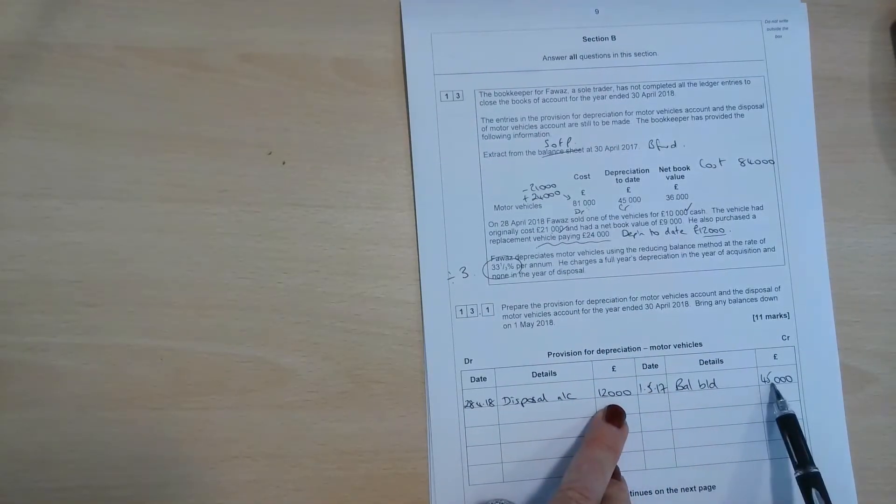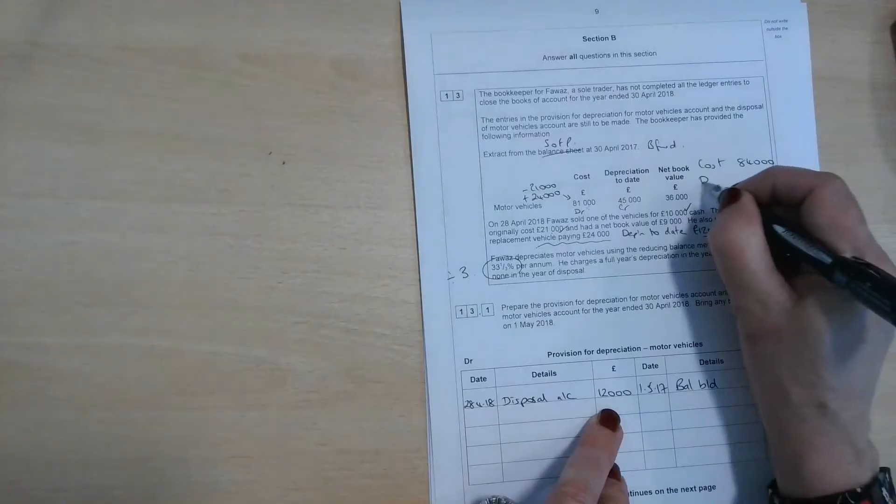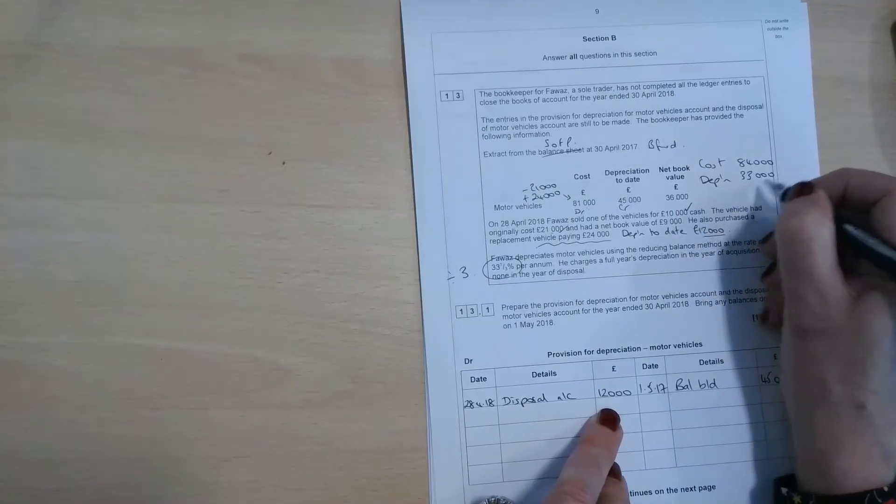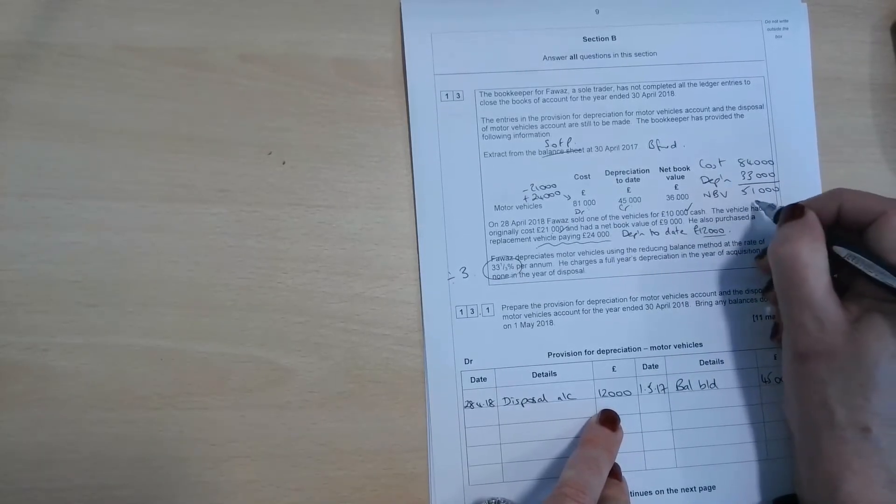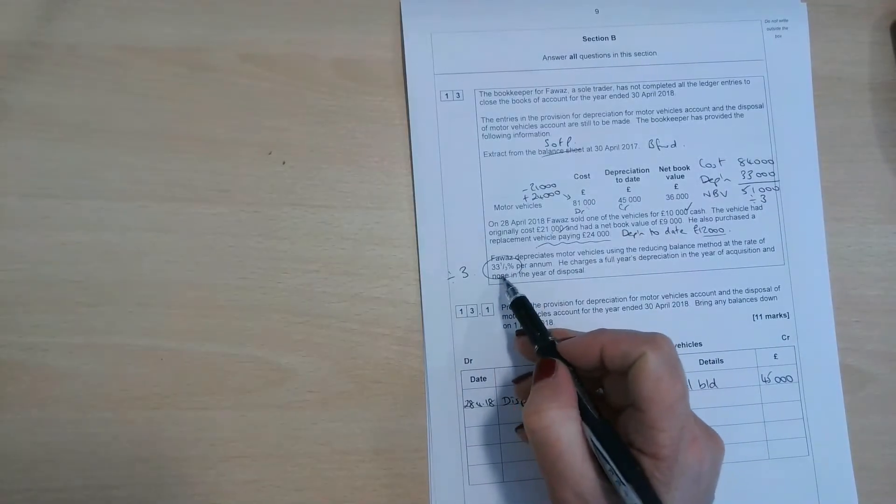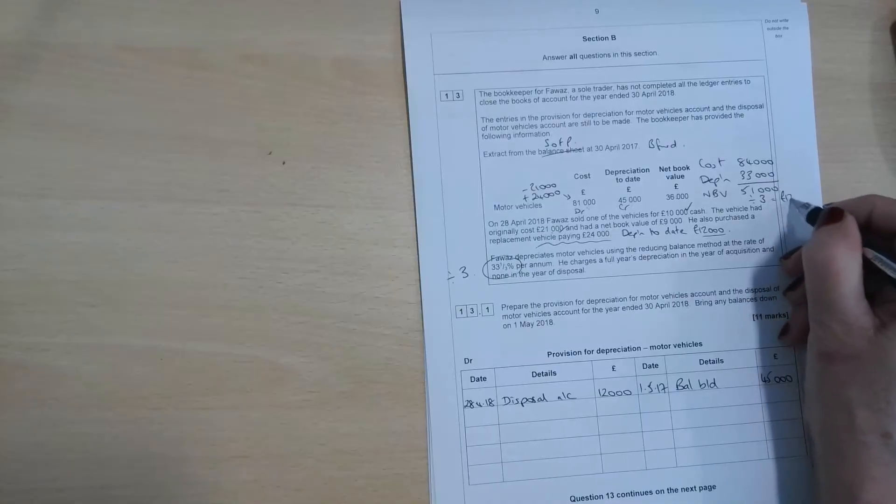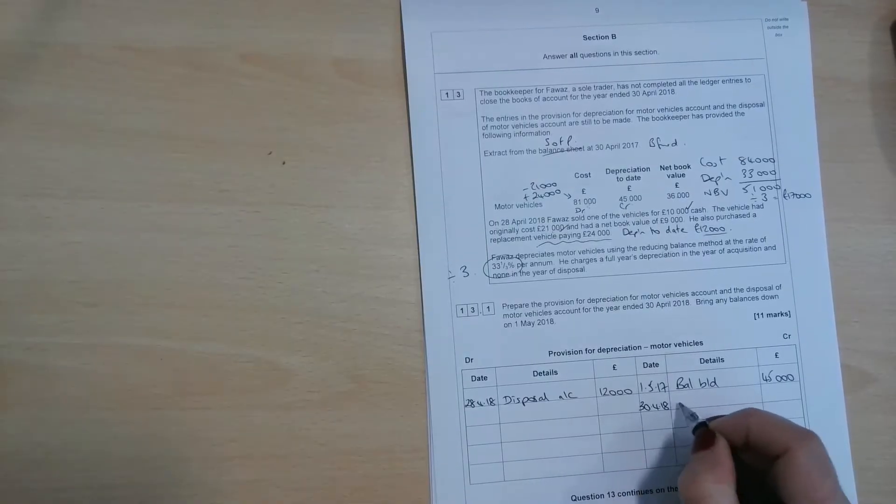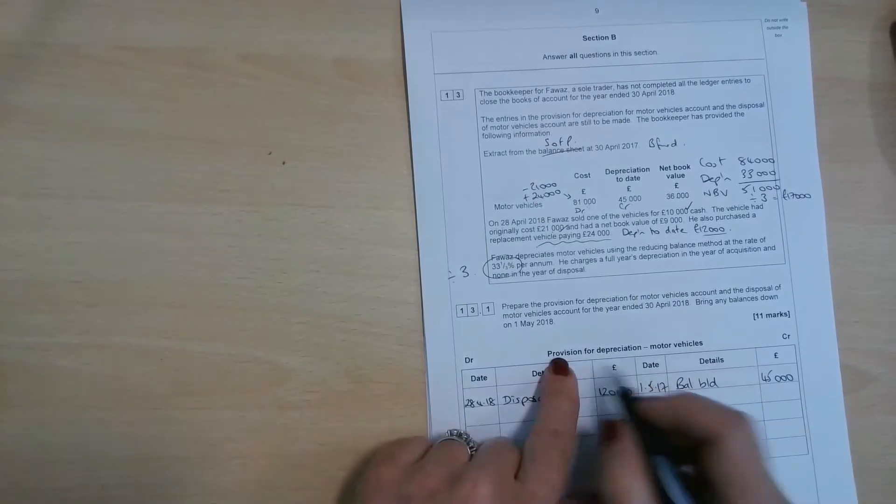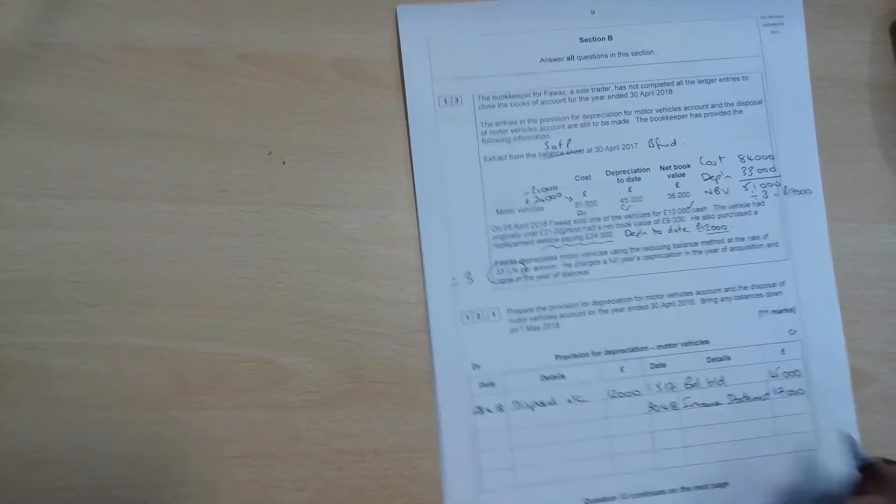In the provision for depreciation, we had £45,000, but we've taken £12,000 off to the disposal account. So we're now left with £33,000 in depreciation. So one minus the other gives us the net book value that we need to work with. So what we've got there, £51,000. If we divide that by three, which is the same as multiplying it by 33 and a third, don't do that. Don't put 33.3% in your calculator. Just find the net book value, divide by three. 51 divided by three, I think, is £17,000. So the depreciation that's going off to the income statement on the 30th of April 2018, we're going to credit this provision for depreciation and debit the income statement. So £17,000 goes in there.